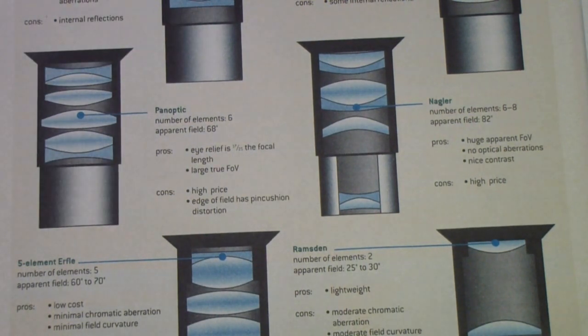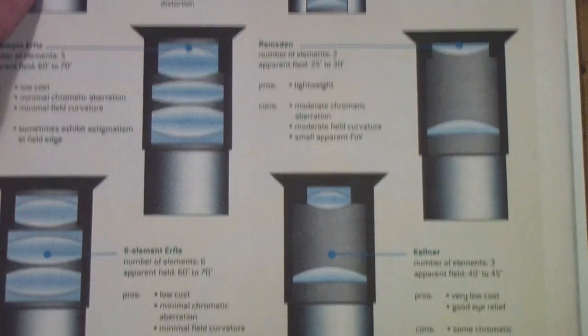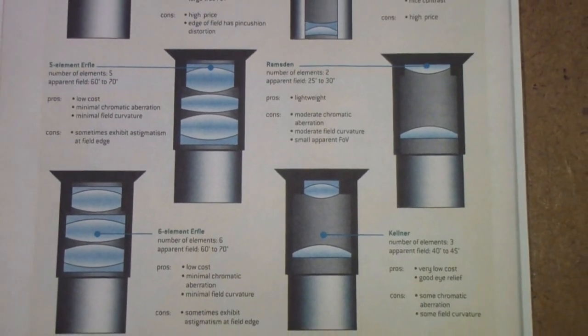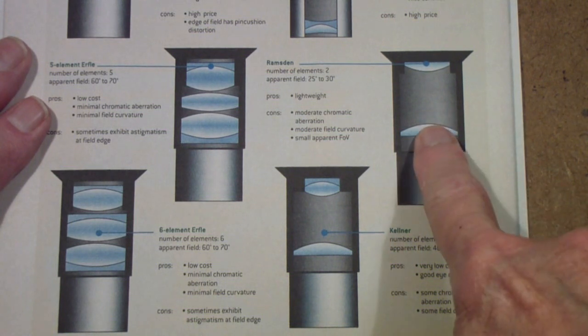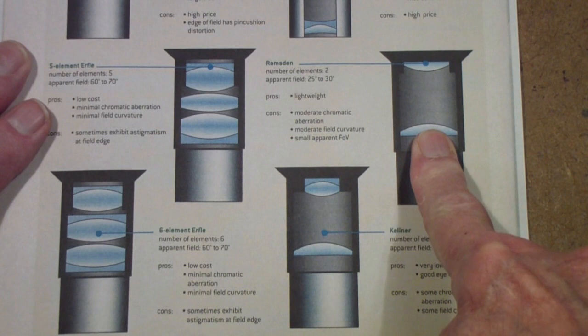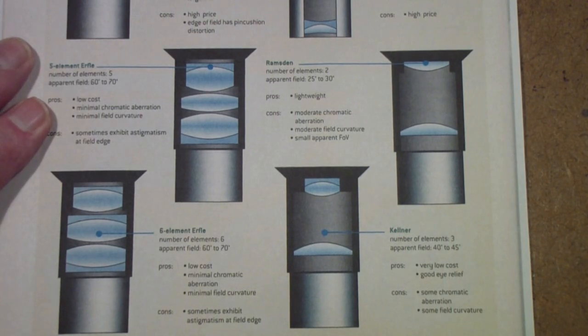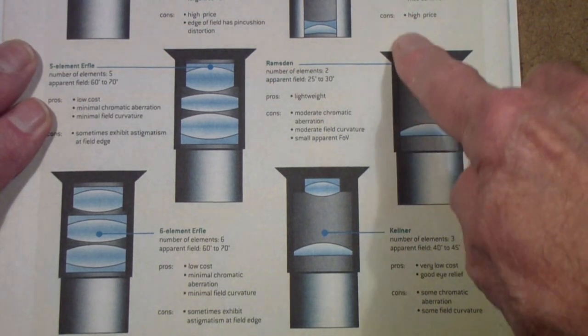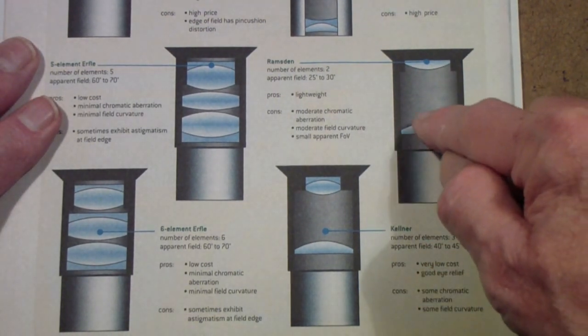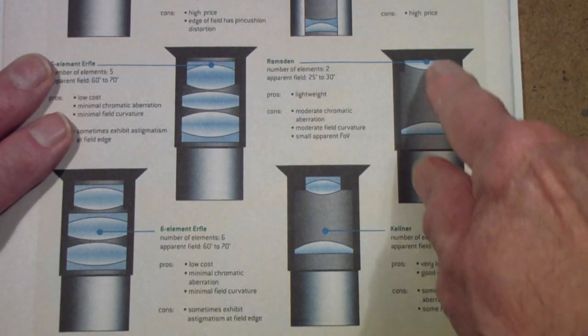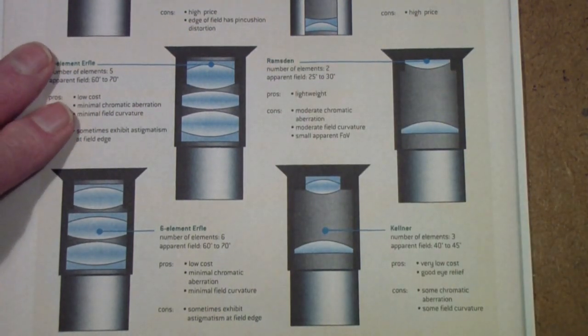So what are the different kinds of eyepieces that you can get? Down here you see one of the simplest eyepieces—this is called a Ramsden. Notice it has two lenses, and it's pretty much the simplest eyepiece that you can get. Earlier I talked about a telescope I got when I was nine years old—it effectively had a Ramsden eyepiece, although it didn't have a changeable eyepiece. This is just named for the person that popularized this particular design.